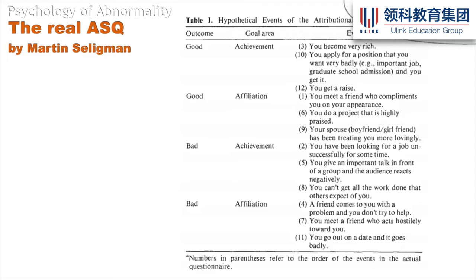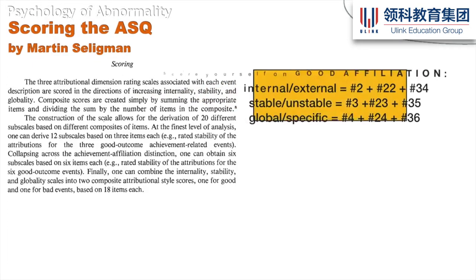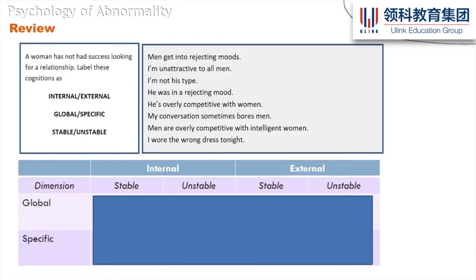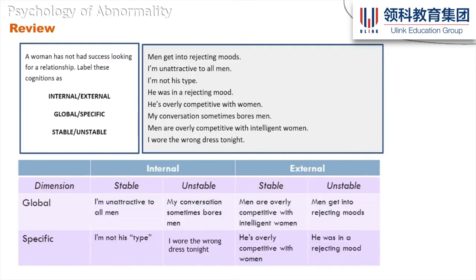Through secondary resources we can find all 12 ASQ items organized by their various categories. You can gather separate scores for each. According to attribution theory, the reason for depression is that you make bad events internal — they're your fault — you make the bad stuff global — it affects everything — and you make the bad stuff stable — it's forever. So to simplify and restate: depression is caused by internal, global, stable attributions.